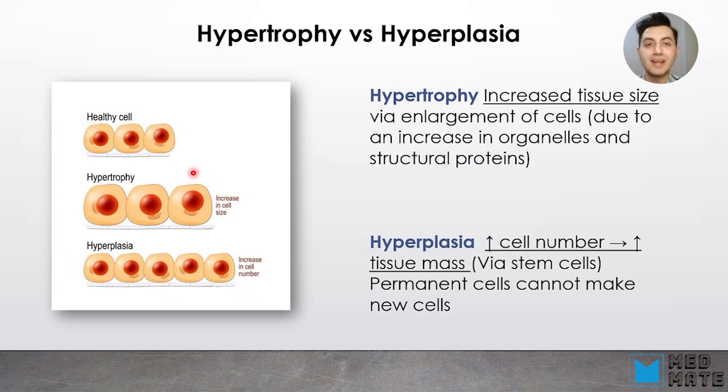In comparison to hypertrophy, hyperplasia is when there is an increase in cellular number. So an increase in cell number leads to hyperplasia, and that requires stem cells. Those tissues that don't naturally have this opportunity to increase their number — for example, permanent cells like cardiomyocytes — cannot undergo hyperplasia. They can only undergo hypertrophy. But in other tissues, hypertrophy and hyperplasia can happen simultaneously.